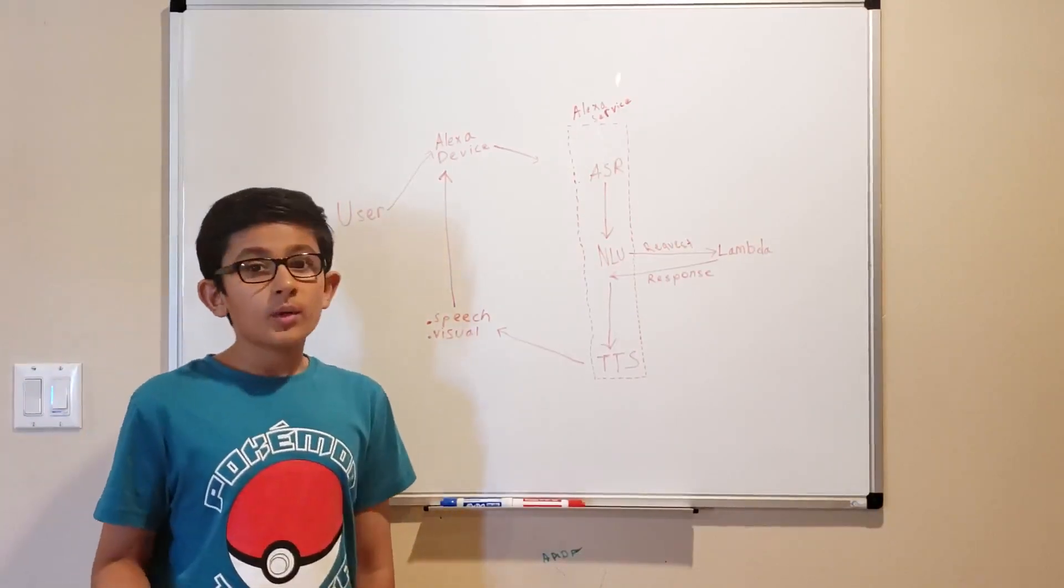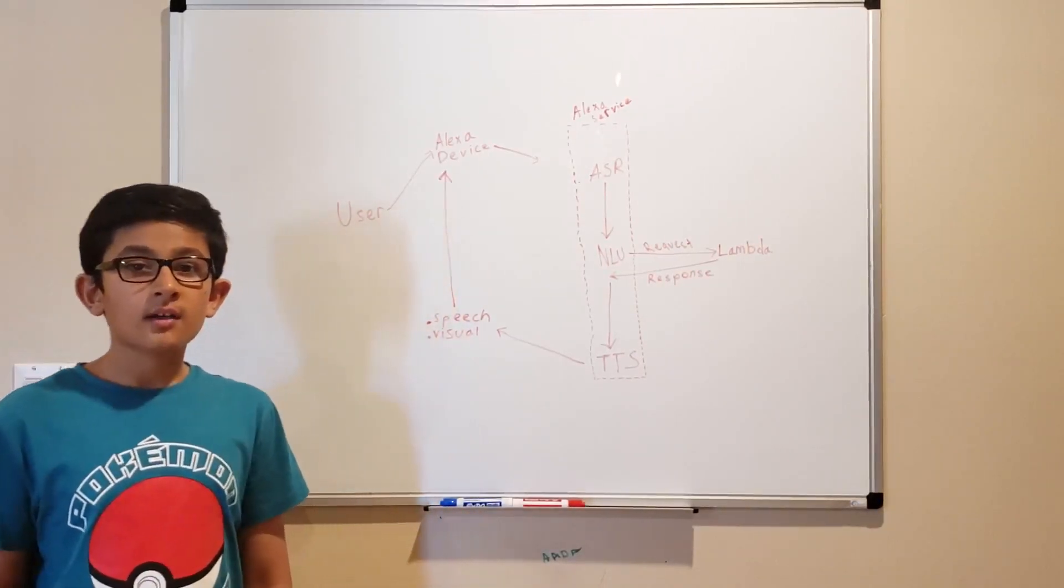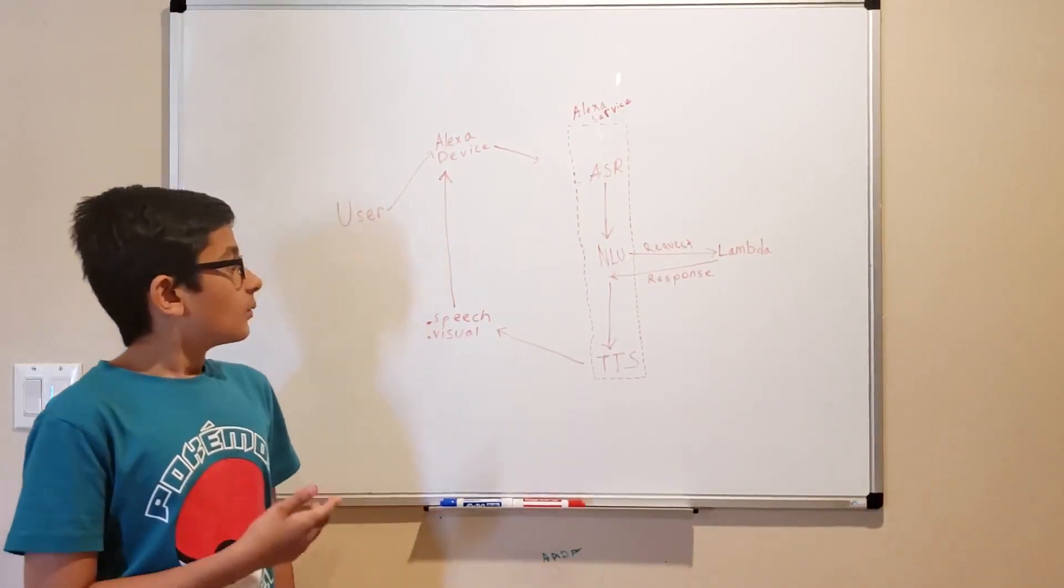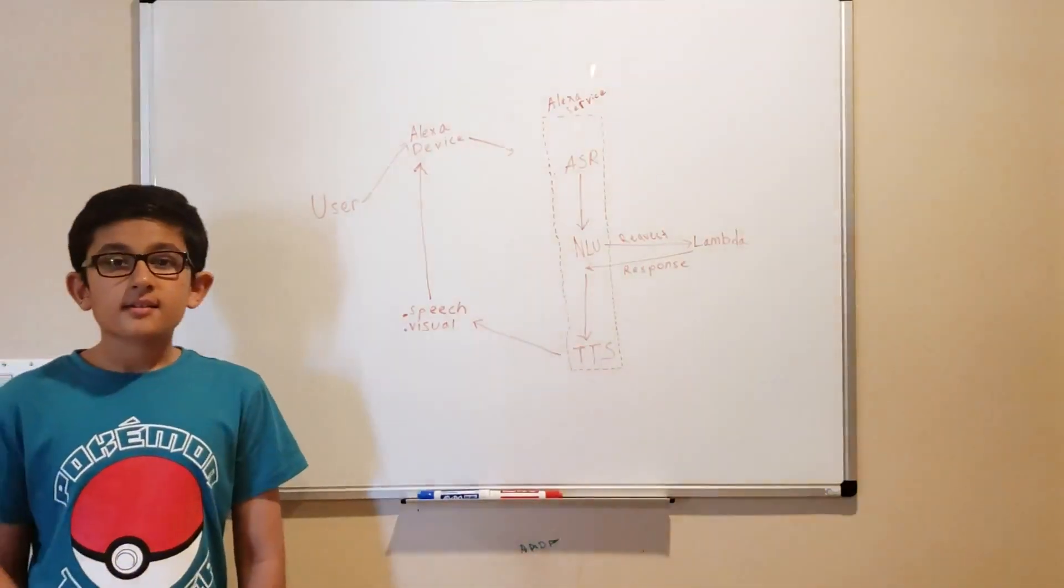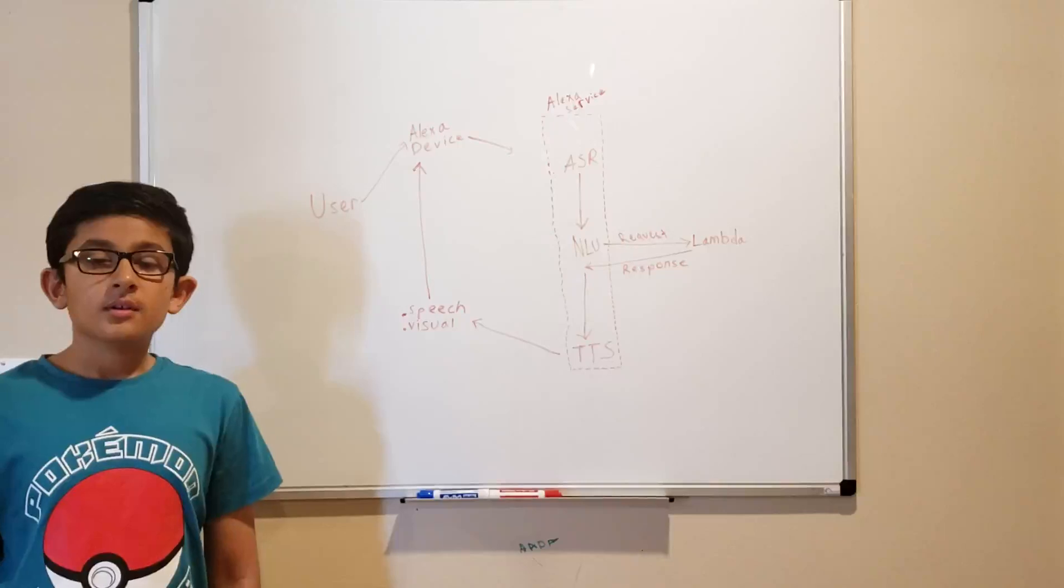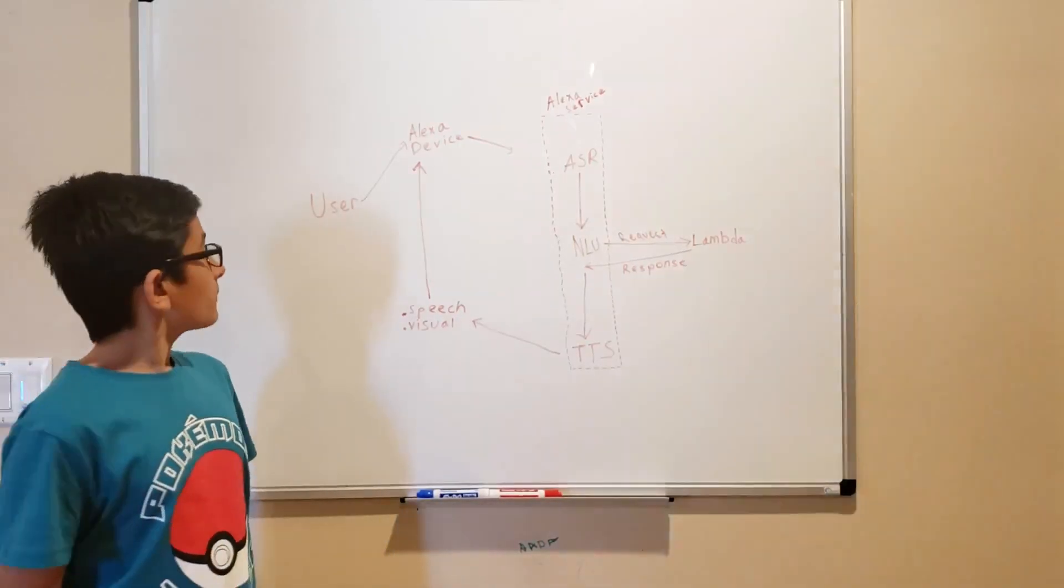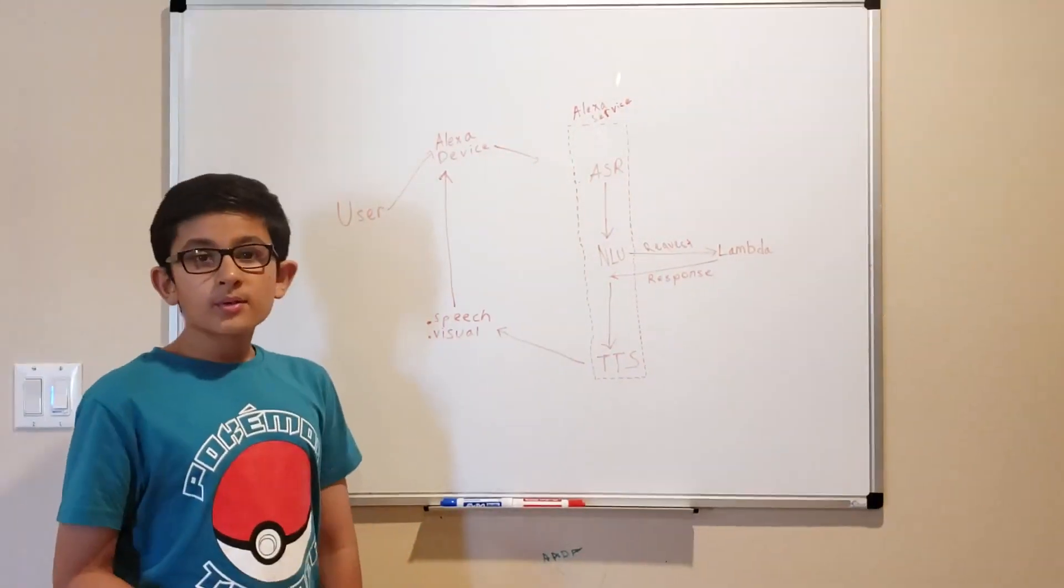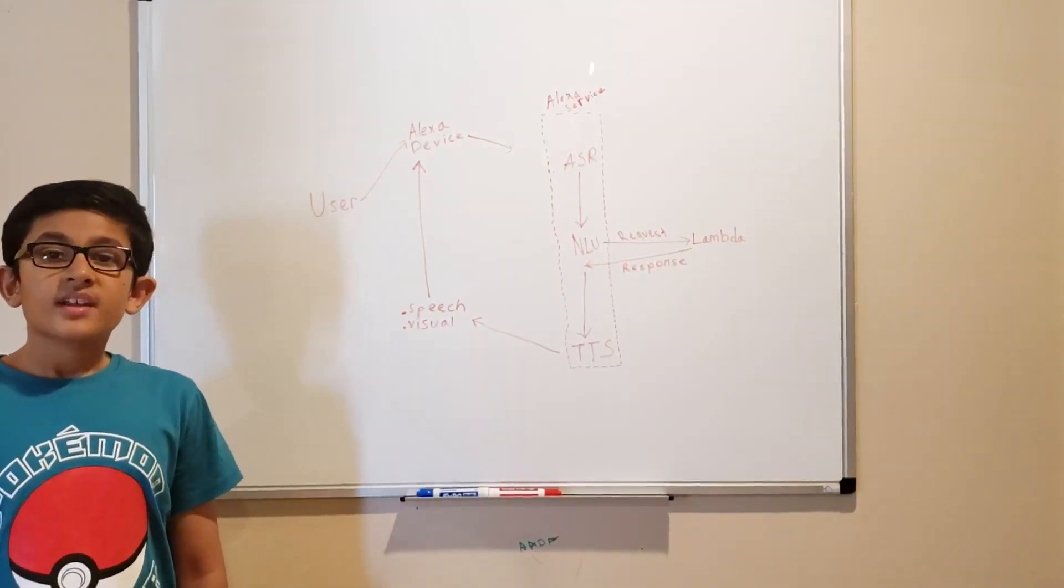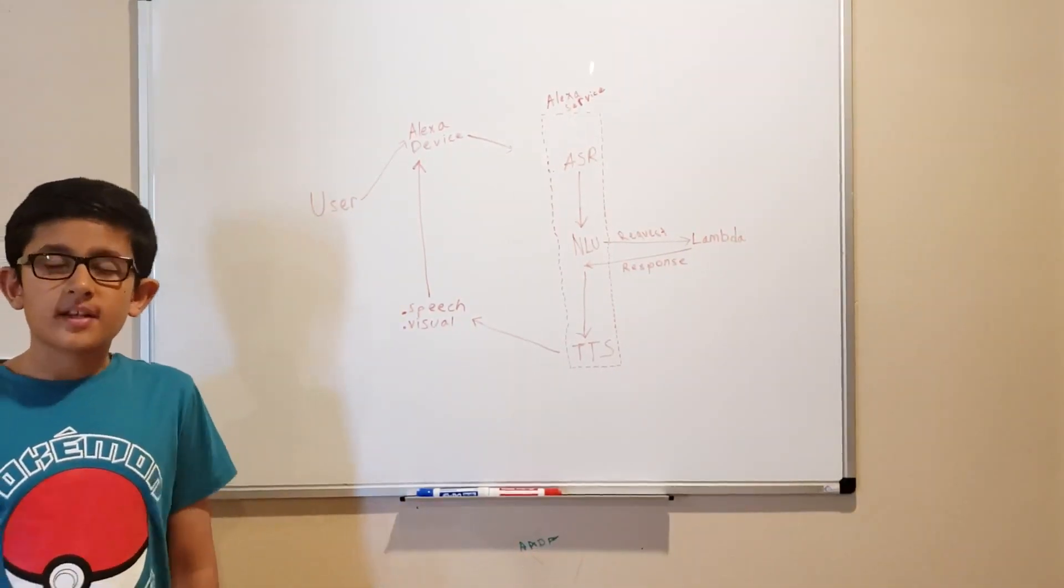Then once ASR is done working on it, natural language understanding starts working on it. What natural language understanding does is it figures out what you want to do. So for example, let's say you open Wheel of Fun and it gave you a fact. And then it asked, would you like to spin again?